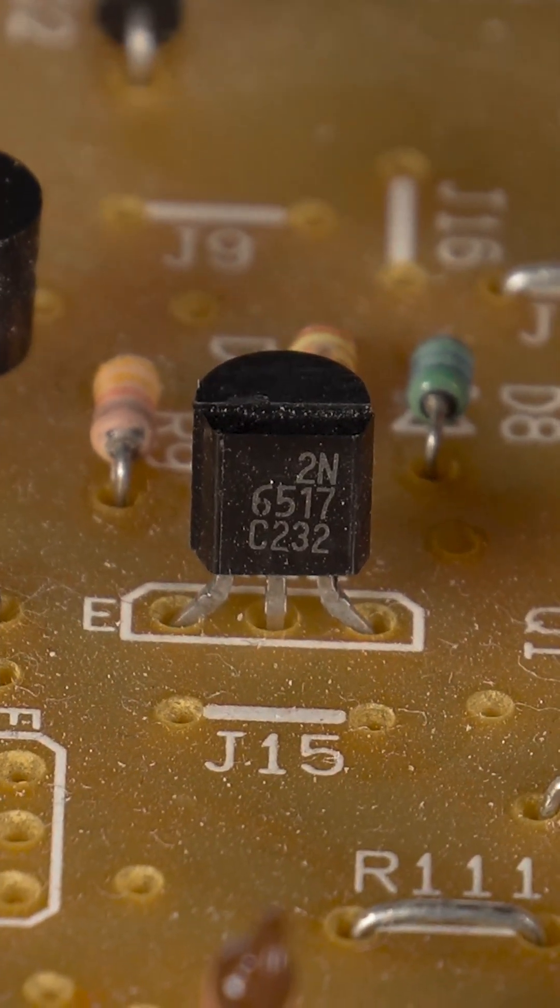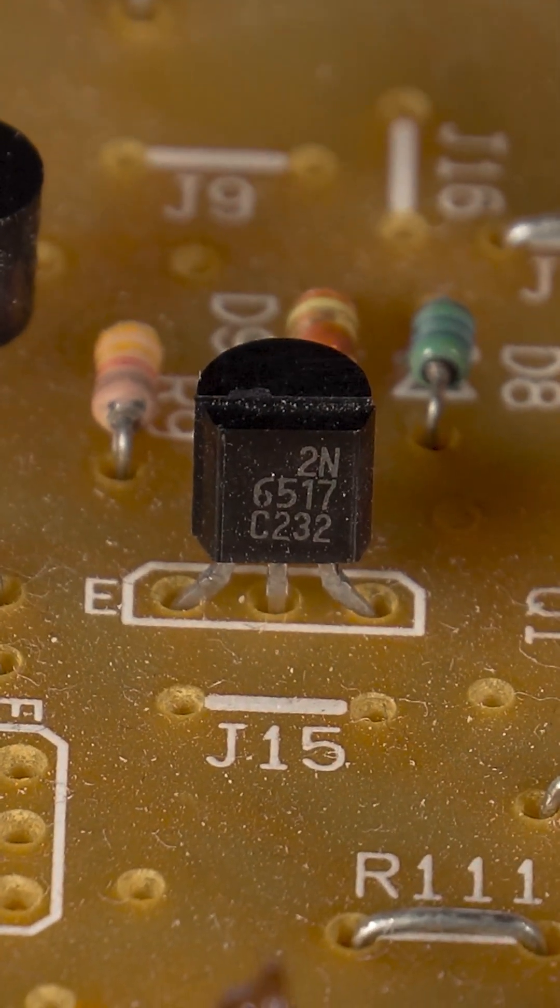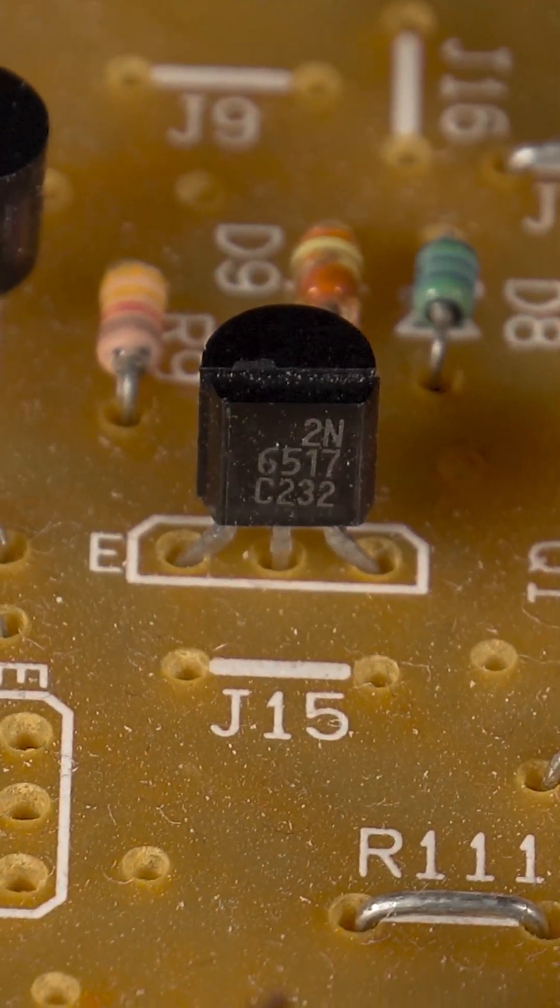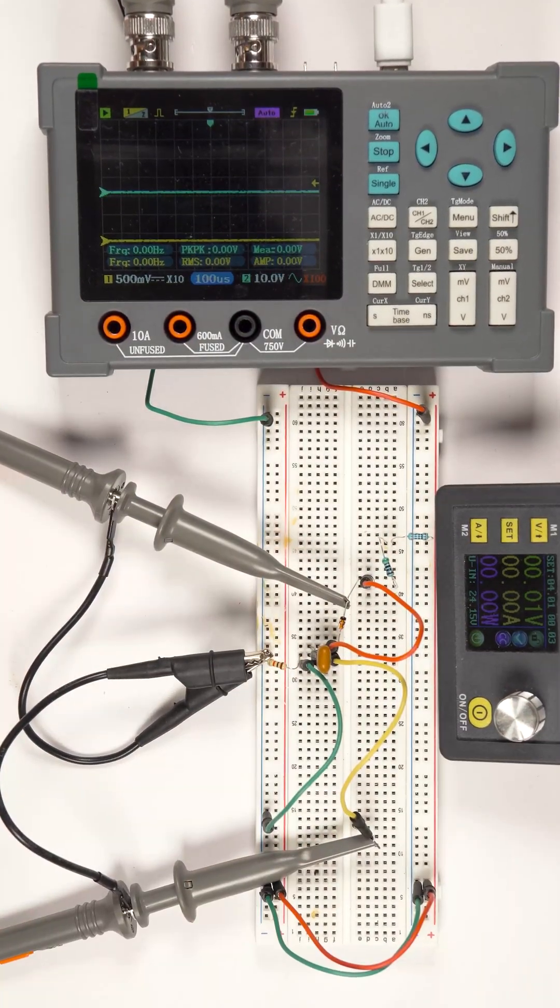You probably know that it's impossible to build an oscillator using a single BJT transistor and no inductors. However, you can use a thyristor to do it.